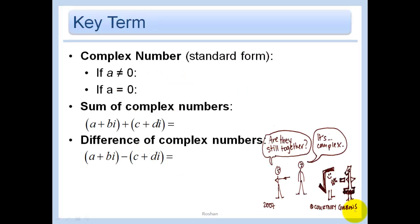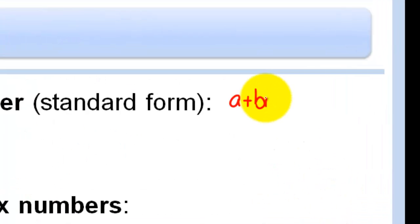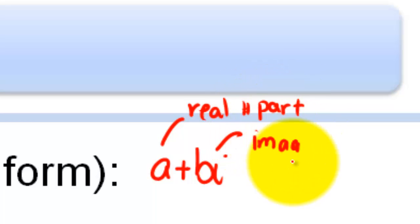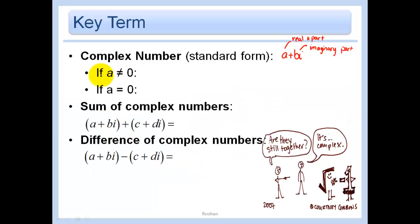A complex number written in standard form is just a plus bi. So we have a real number part and we have an imaginary part. So in these two, let's just assume that b does not equal 0 because if b were equal to 0, then we just have a real number.